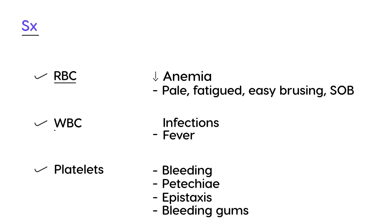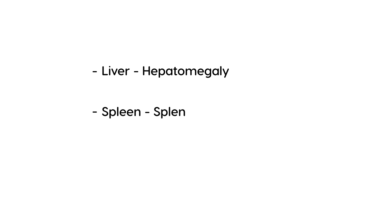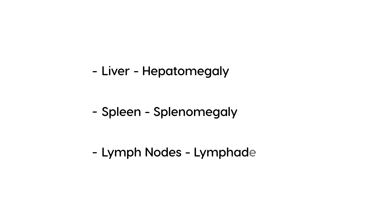Instead of memorizing all this, just think about the key cells not produced because of the malignant transformation of blood stem cells, and you'll understand why these symptoms occur. The leukemic cells can also infiltrate various organs, resulting in enlargement: hepatomegaly when the cells infiltrate the liver, splenomegaly for the spleen, and lymphadenopathy for the lymph nodes.